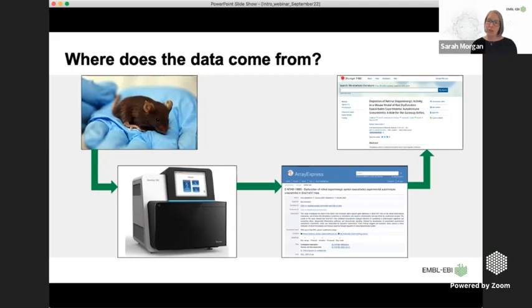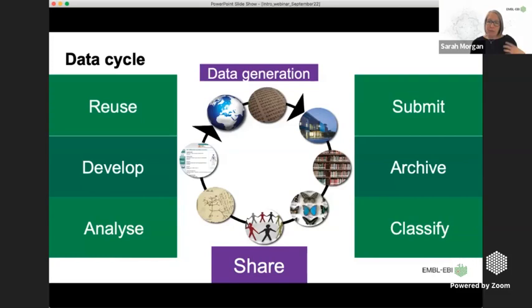If you are publishing, you don't necessarily need to get the data out before you publish. We have ways to hold data, make it available to reviewers, and then set it live once the publication goes live if you wish. However, more and more people are publishing their data through our resources even before producing publications. Our role is to get that data out there as quickly as we can for others to use and share.